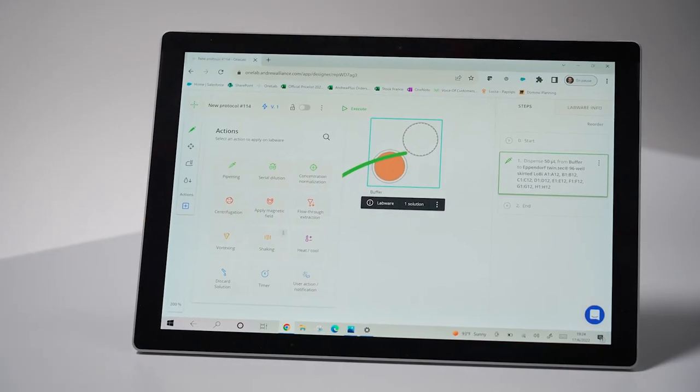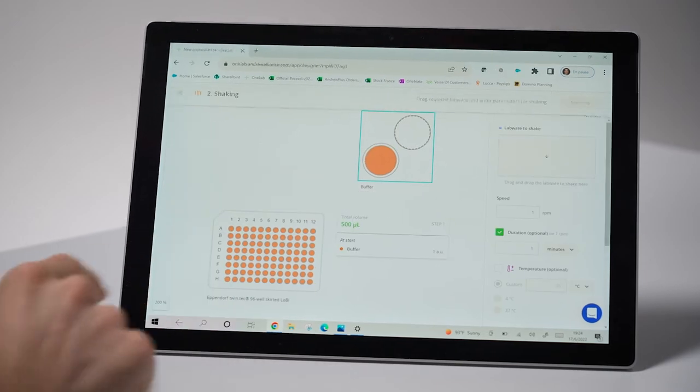This combination of software and hardware working seamlessly together not only speeds up method development to easily achieve a hands-off workflow, but also helps to provide consistency and reduce any variation between runs. Heater Shaker Plus is notably a great companion for protein digestions and bead-based extractions.